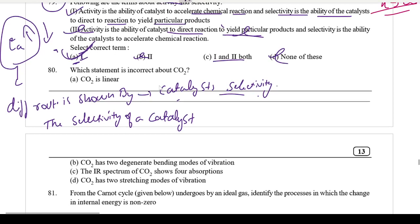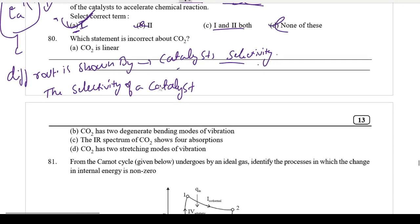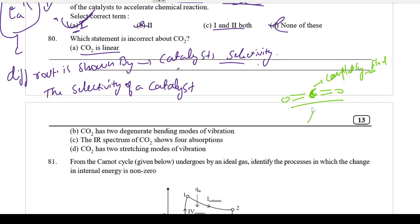Question 80 asks which statement is incorrect about carbon dioxide. First statement: CO₂ is linear. Obviously it is linear — carbon has 4 valence electrons, it bonds with two oxygens, it is completely filled with no vacant orbital, so it forms a linear shape. This statement is correct, not incorrect.